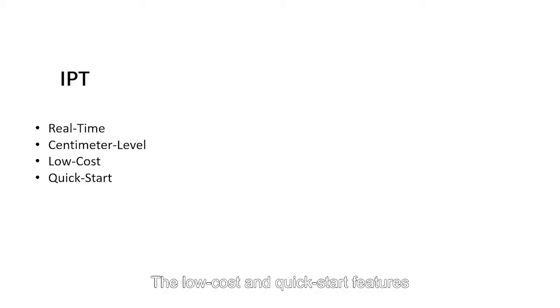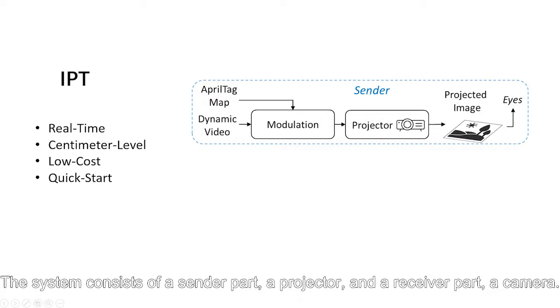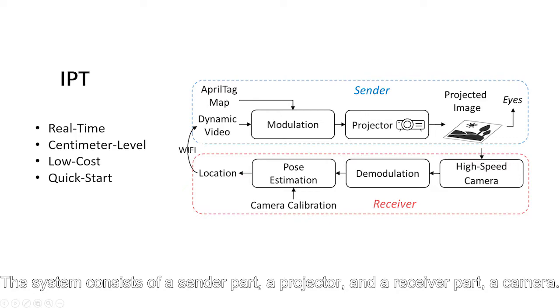The low cost and quick start features make this method a great choice for AR platforms. The system consists of a sender part (a projector) and a receiver part (a camera). For the sender, we use the flicker fusion property of human eyes to hide April tags.